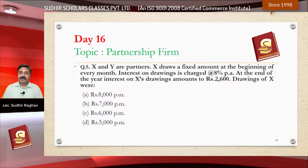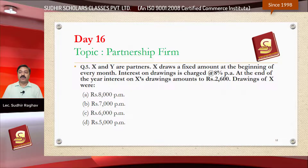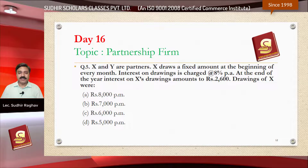The last question: X and Y are partners. X draws a fixed amount at the beginning of every month. Interest on drawings is charged at 8 percent per annum. At the end of the year, interest on X's drawings amounts to rupees 2600. Drawings of X were — option A rupees 8000 per month, option B rupees 7000 per month, option C rupees 6000 per month, or option D rupees 5000 per month.